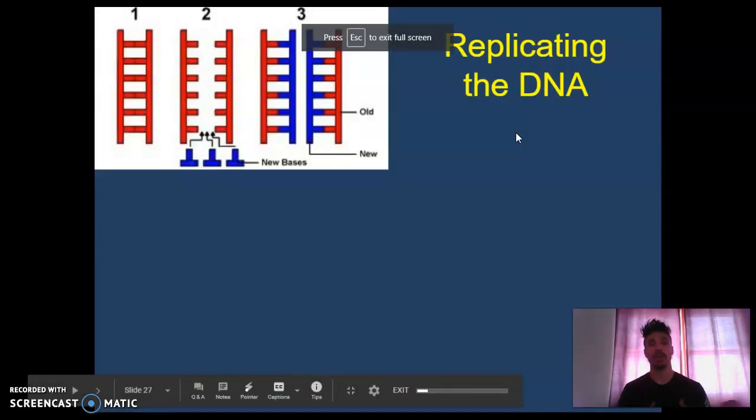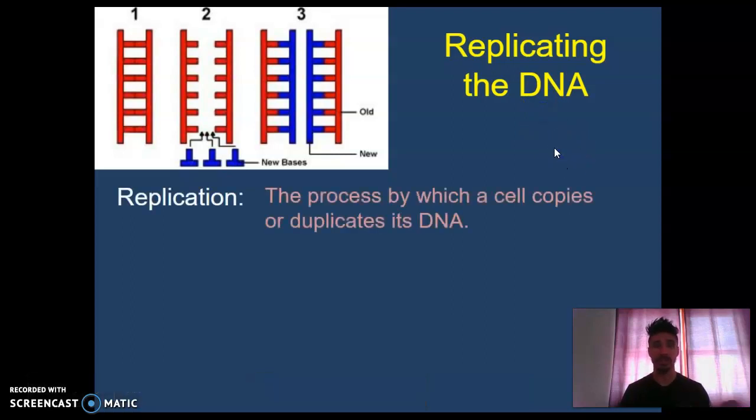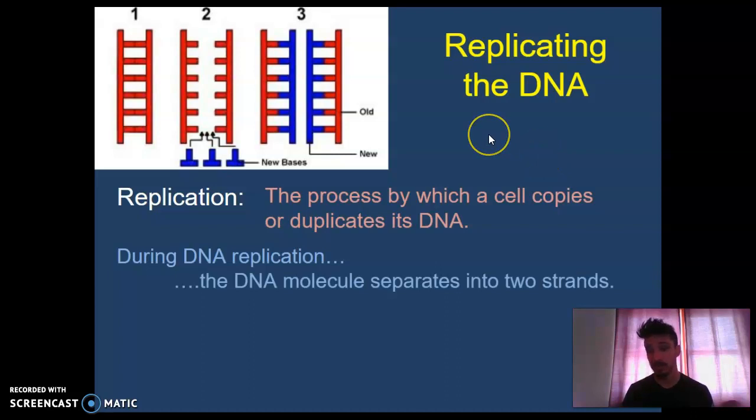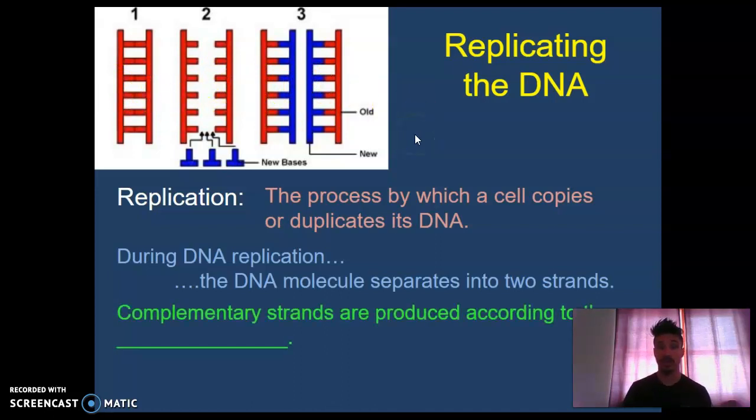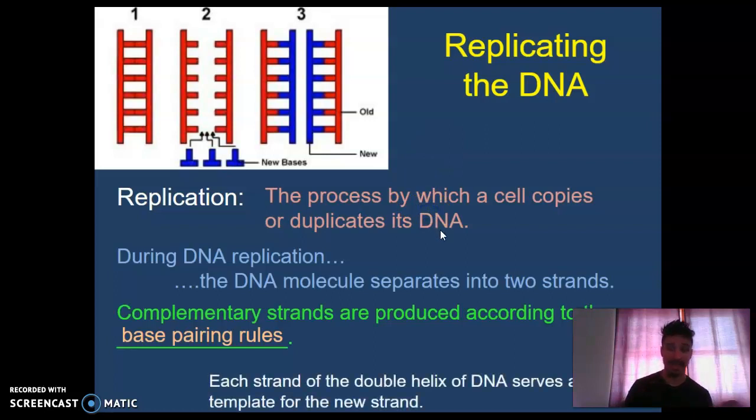So right now we're talking about what DNA has to go through to be replicated, and this is that process that occurs all the time during S phase of interphase of the cell cycle. So what is replication? Well, it's the process by which a cell copies or duplicates its DNA. Now, during DNA replication, the DNA molecule does separate into two strands. Complementary strands are produced according to specific rules, and those rules are base pairing rules or complementary base pairing rules. This is the same thing as adenine pairs with thymine, cytosine pairs with guanine. That's why each side of the DNA molecule is a template for the other side. Because if there's an A on this side and we're using this side as a template, we're going to put in a T for the other strand. So we can build the other side from one side.